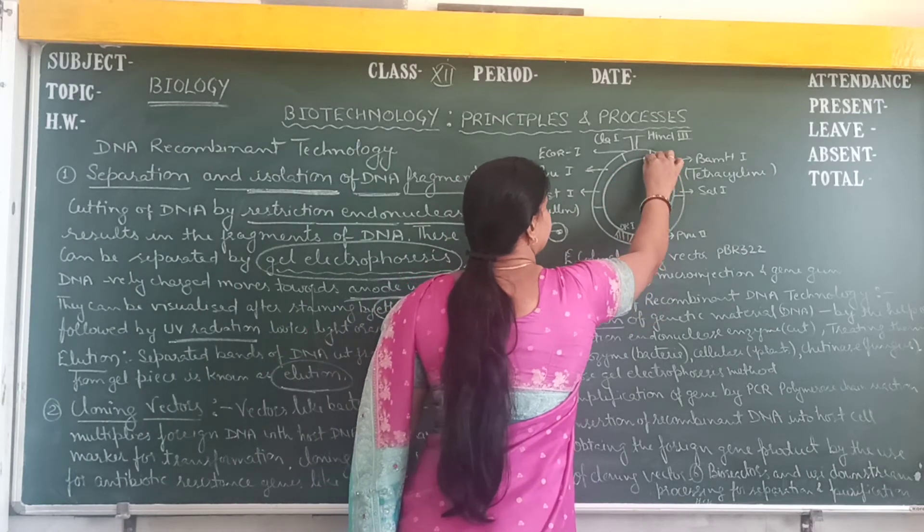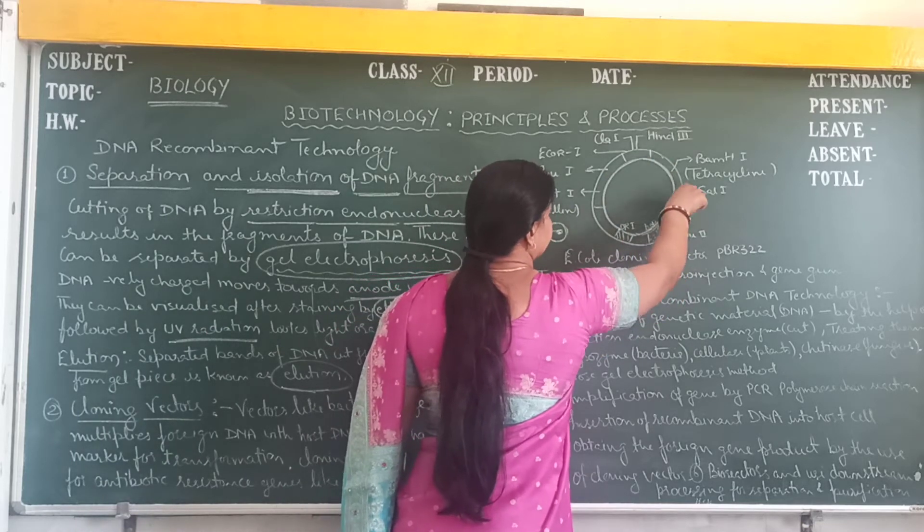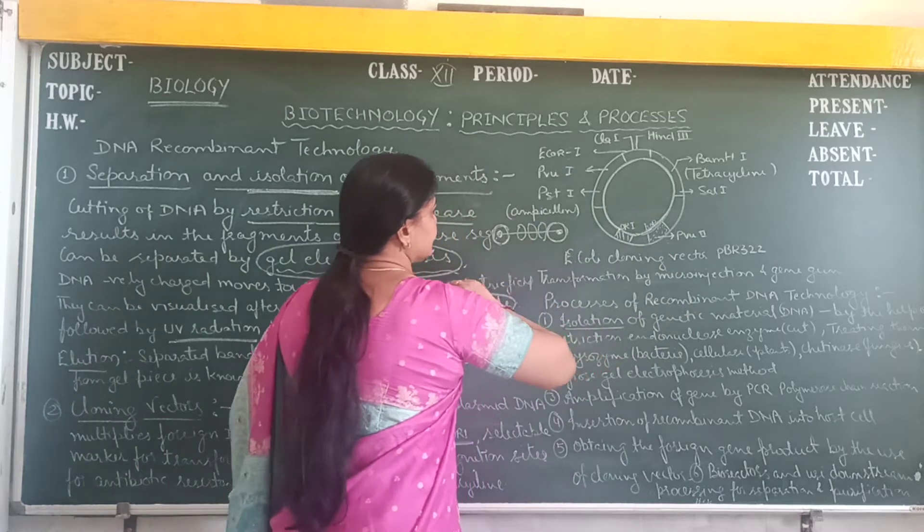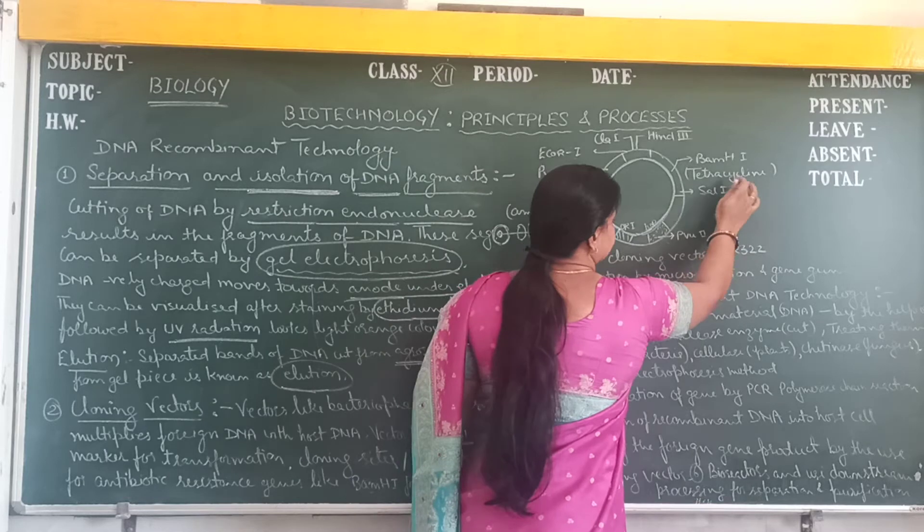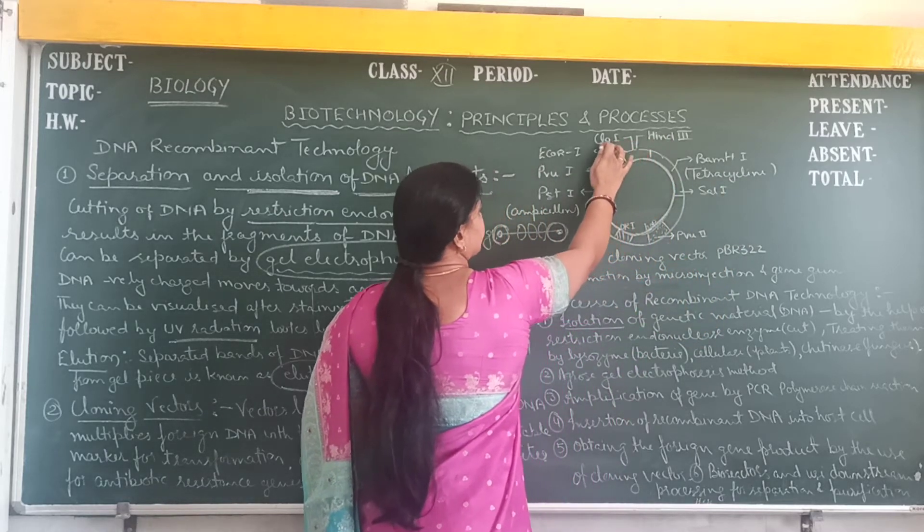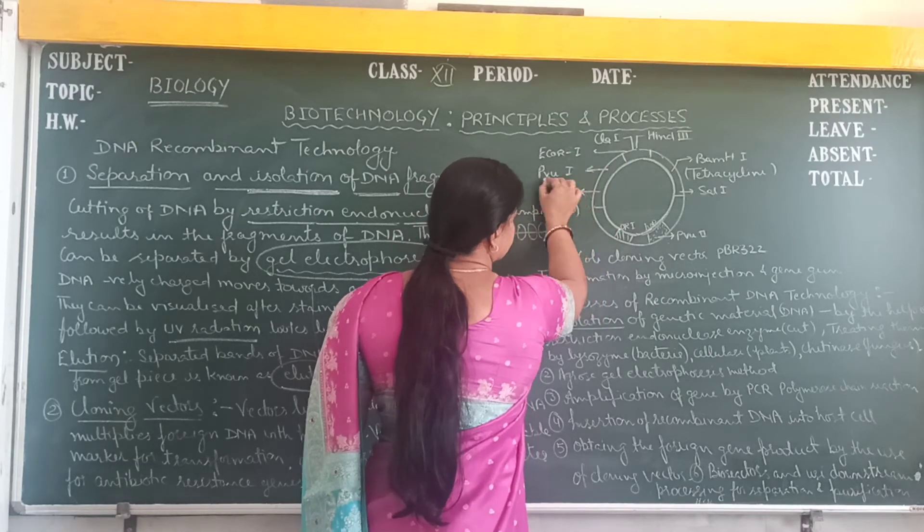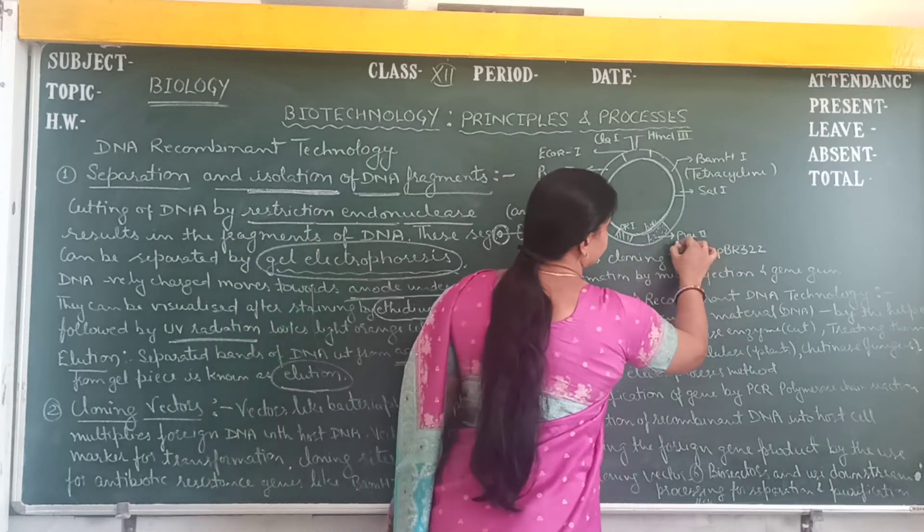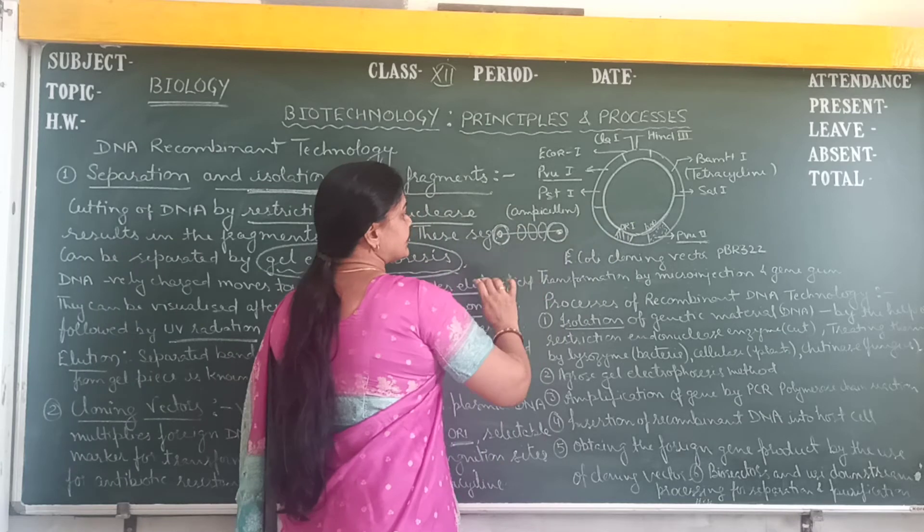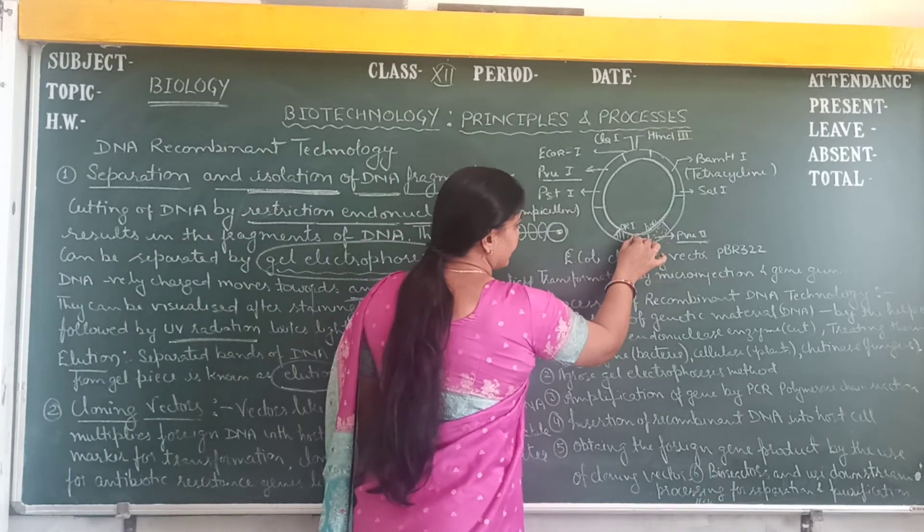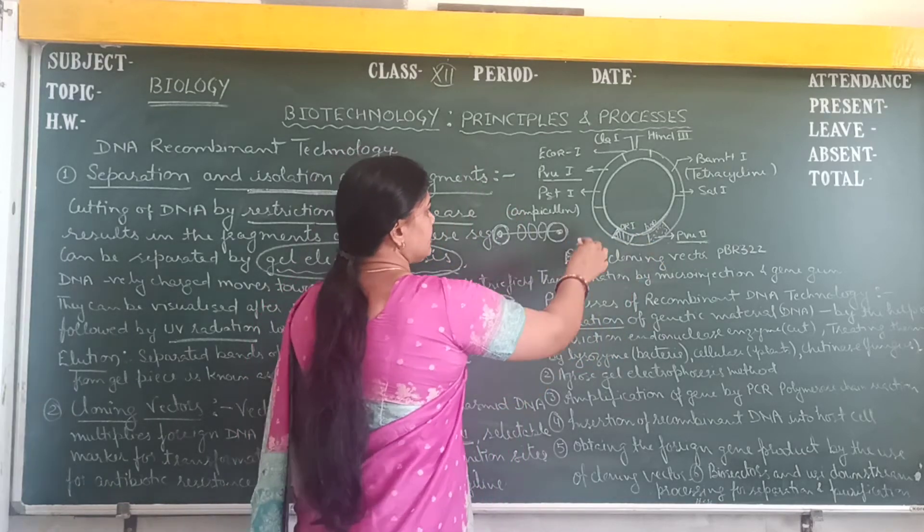You can see this is the circular DNA. Here the DNA can be separated at different recognition sites. Like this is SalI, this is BamHI for tetracycline, this is HindIII, ClaI, this is EcoRI, this is PvuI, this is PvuII, and this is PstI for ampicillin. And this is the ori, origin of replication, the starting point.